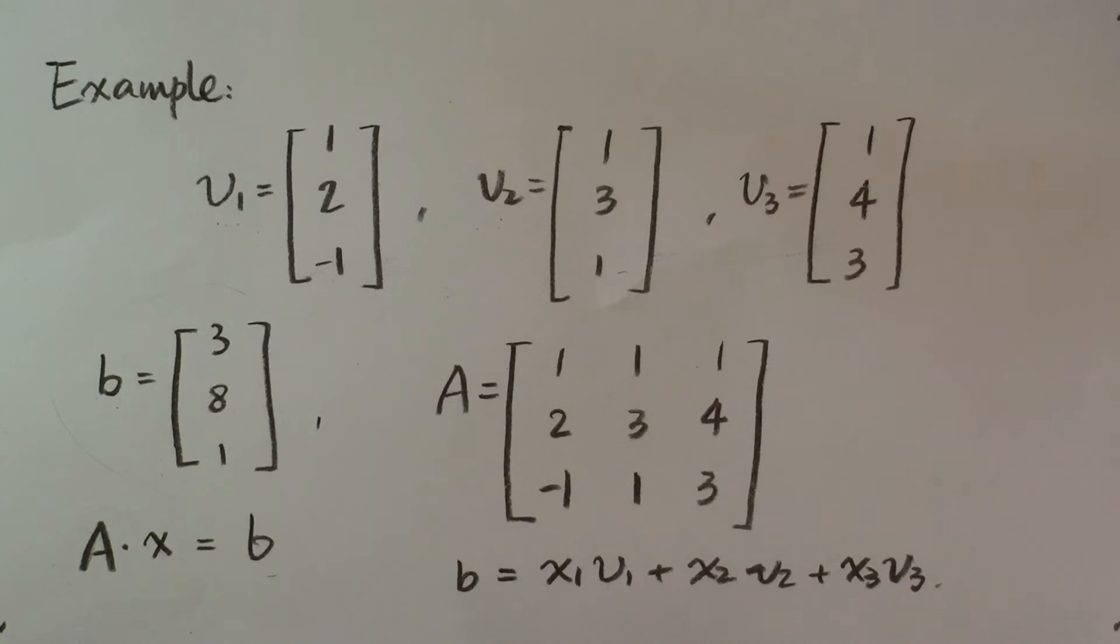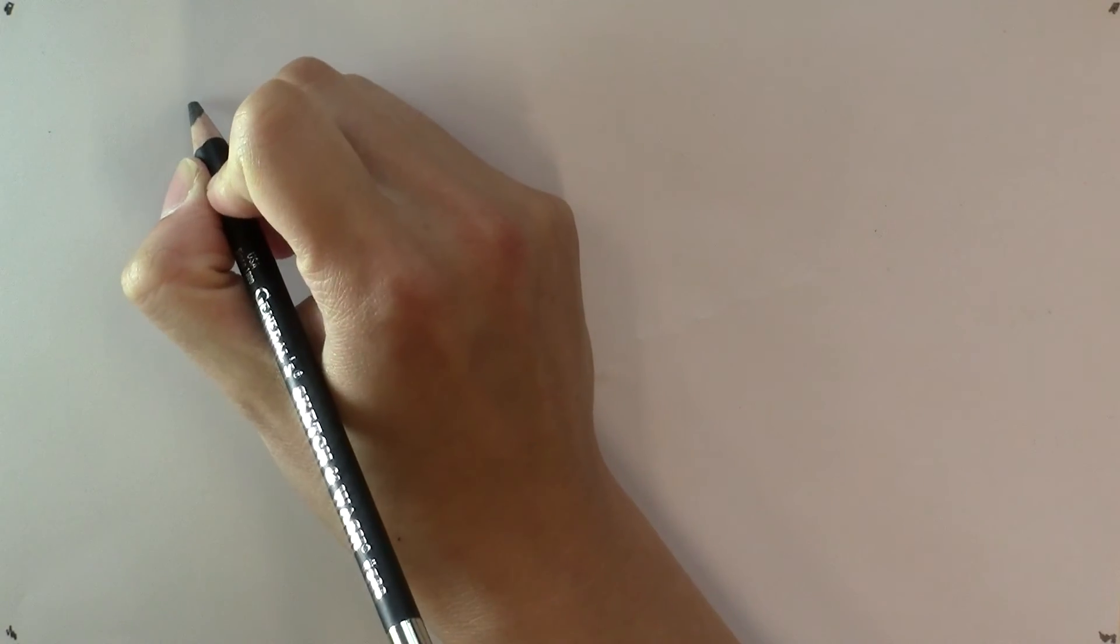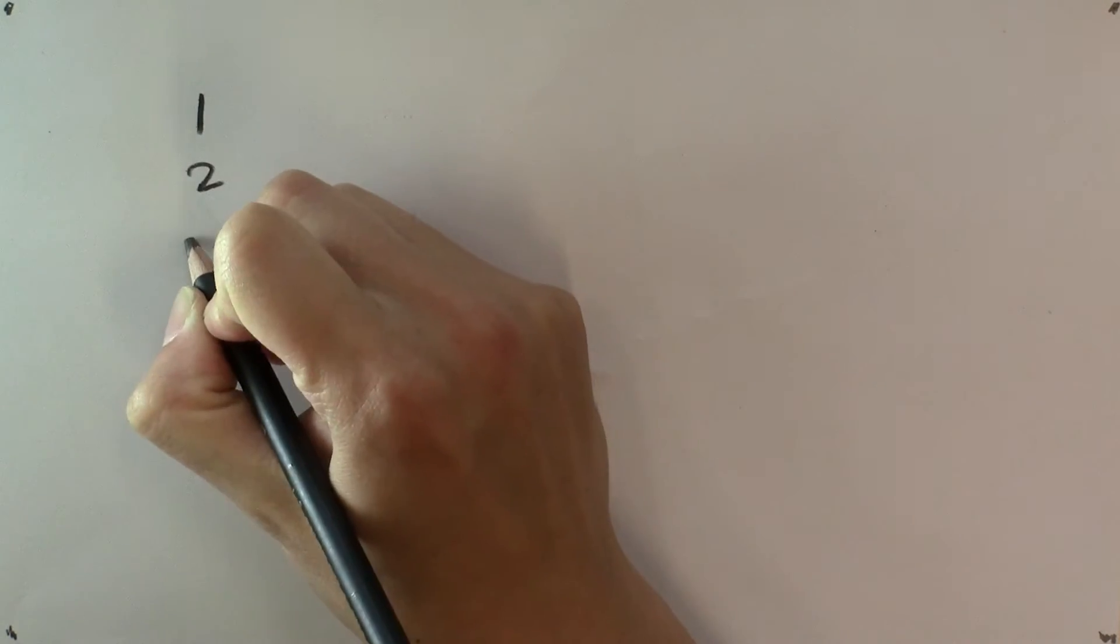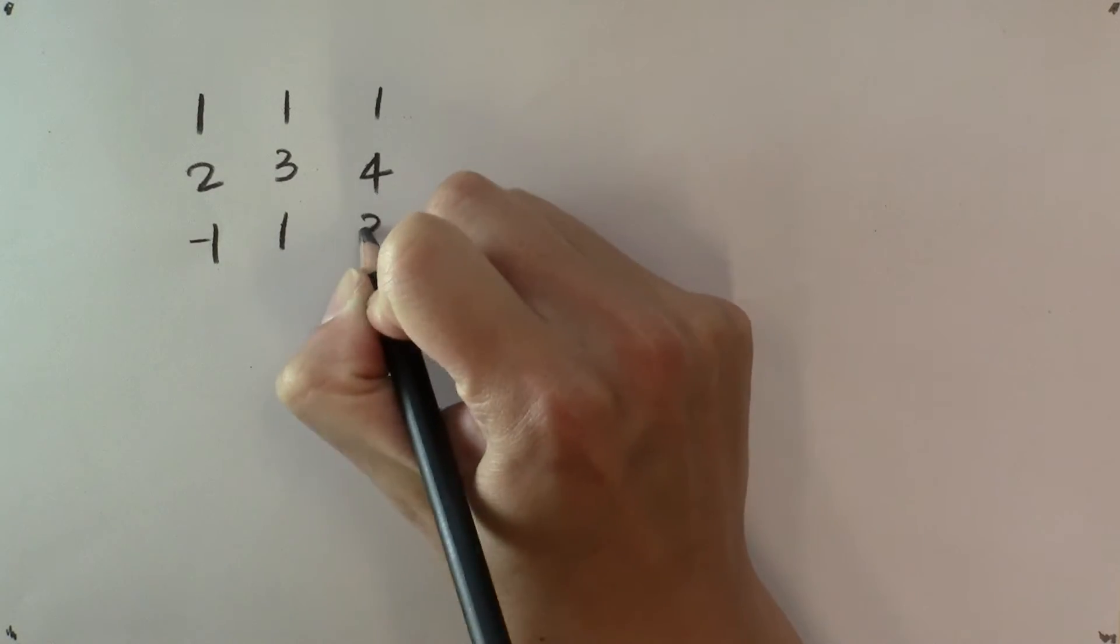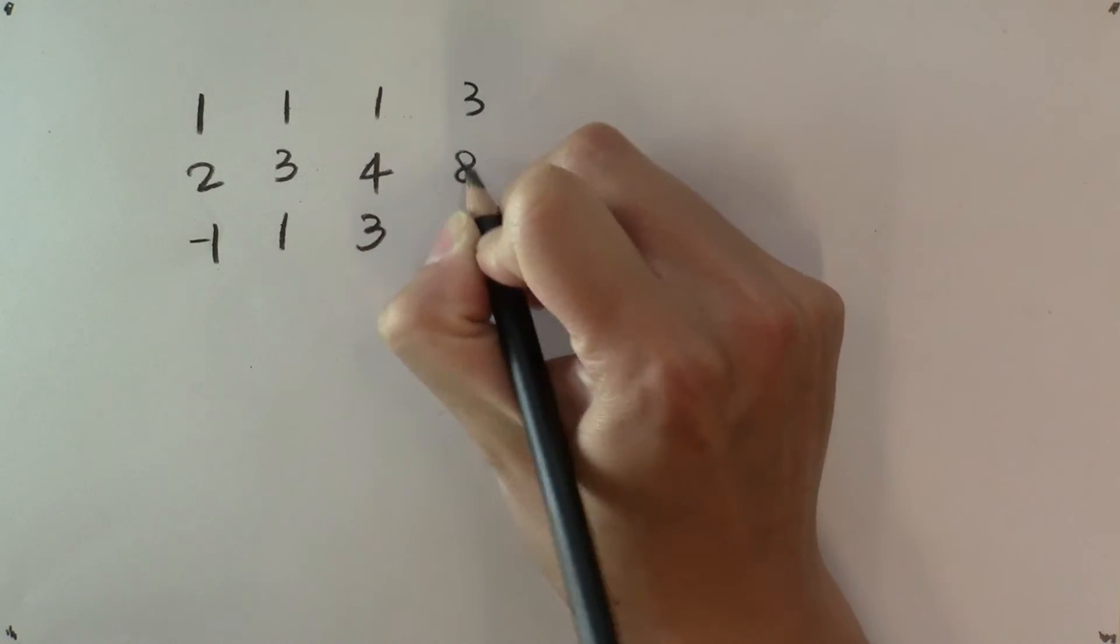Remember how to solve a linear system? That's right, you form the augmented matrix [1, 1, 1, 3; 2, 3, 4, 8; -1, 1, 3, 1].